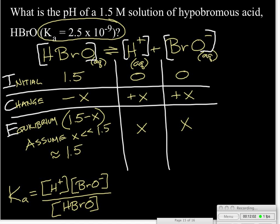But later on, we have to check that assumption when we're done. And later on, we're going to find that X is so small that if you subtract it from 1.5 and pay attention to significant figures, as you should always do, you're going to find that it's going to remain 1.5.